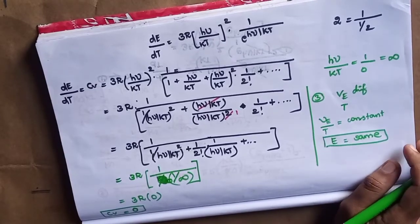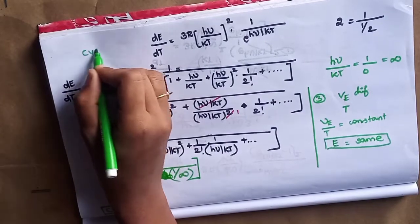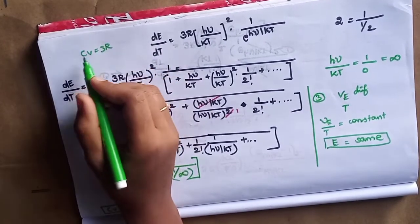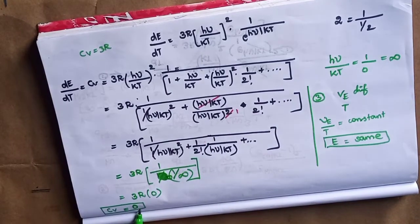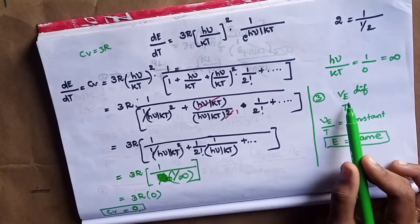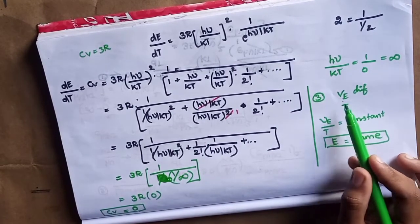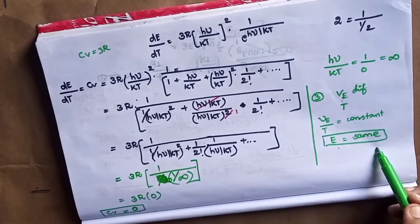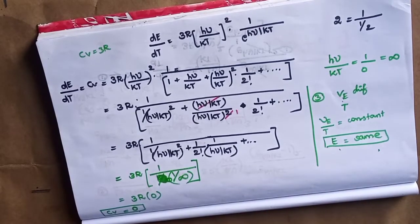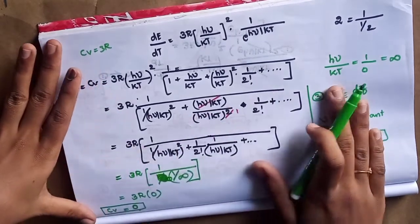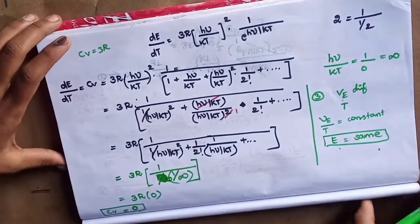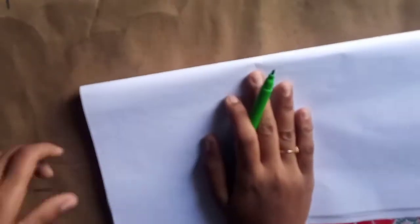So to summarize: first, for higher temperature, cv equals 3R. Second case, lower temperature, cv equals 0. Third point: the energy will be the same — the frequency mu-E divided by temperature is equal to a constant or same value. So all atoms will have the same constant value. This question is complete.